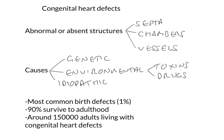Heart defects are the most common birth defects, seen in around 1% of births. However, in the modern day and age, around 90% survive into adulthood. Only about 50 years ago this number was far less favourable and many children died. The consequence of this improved survival is that there are lots of adults living with congenital heart defects — something on the order of about 150,000 adults in this country.